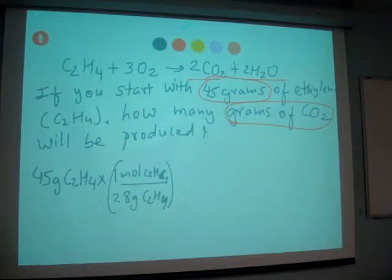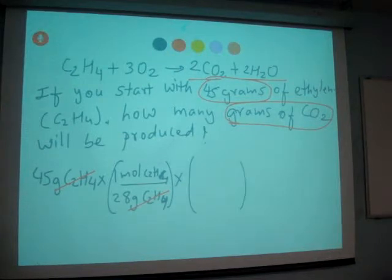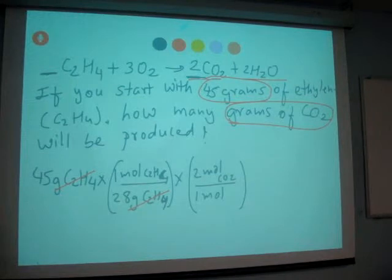When we do that, grams of ethylene cancel, and we convert to moles of ethylene. Then we multiply by the mole ratio. The 1 to 2 mole ratio means 2 moles of CO2 are produced per 1 mole of ethylene.